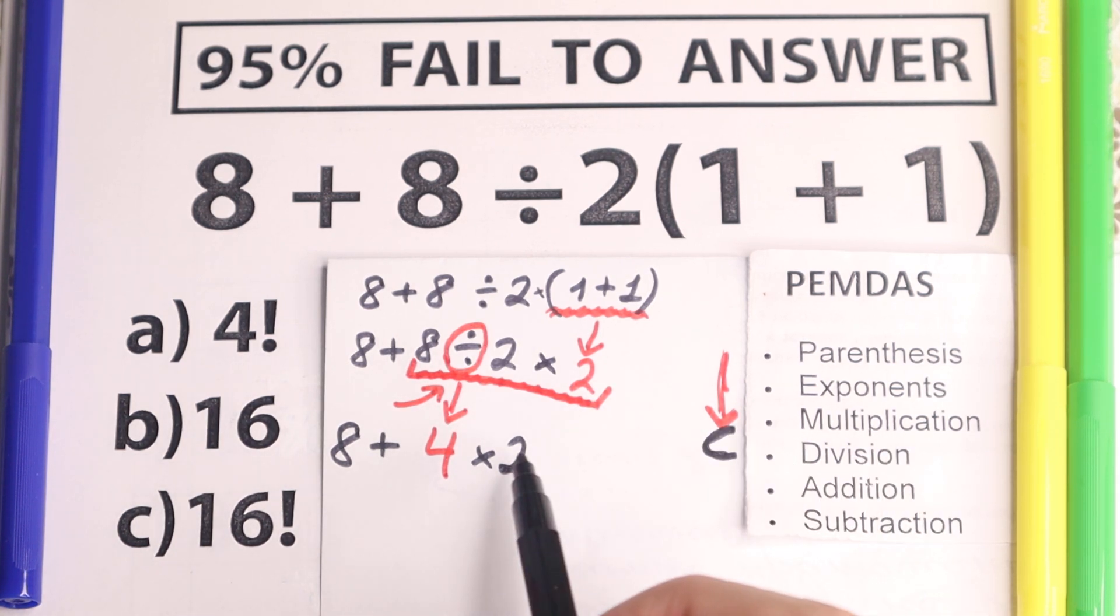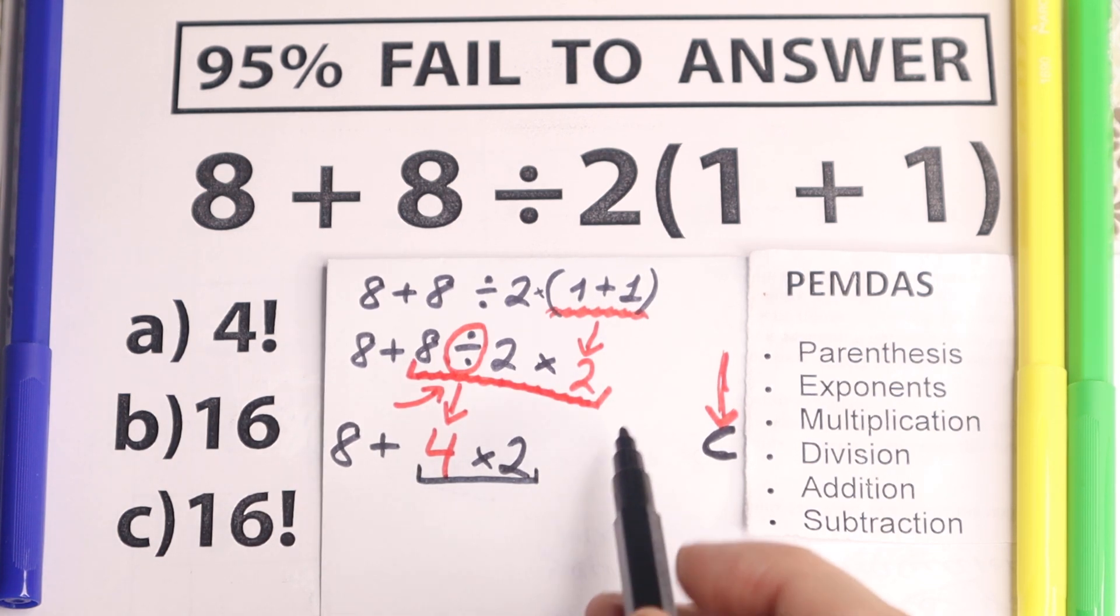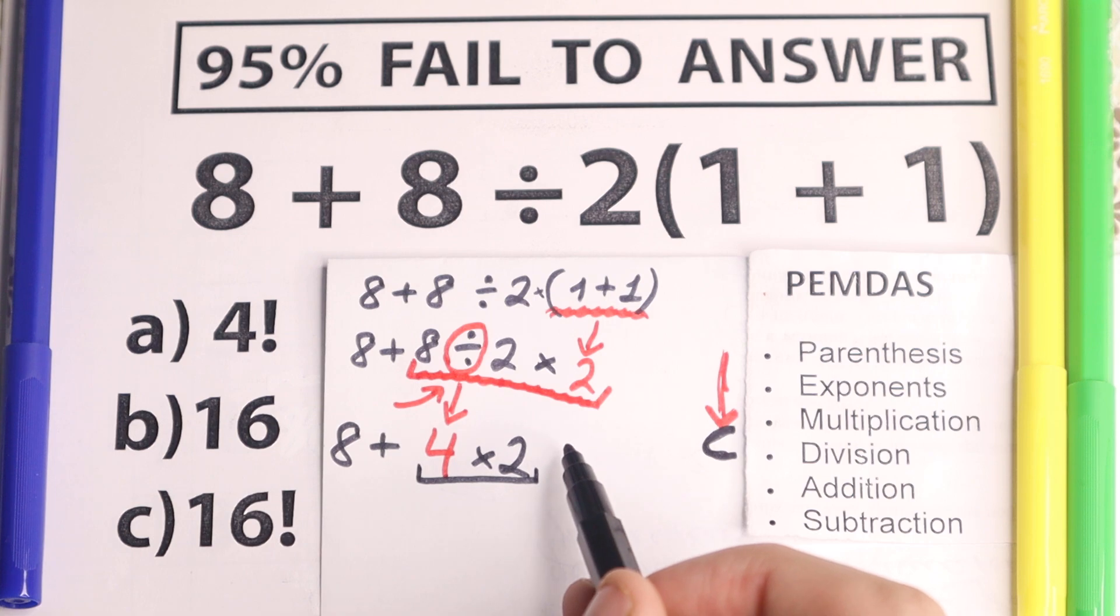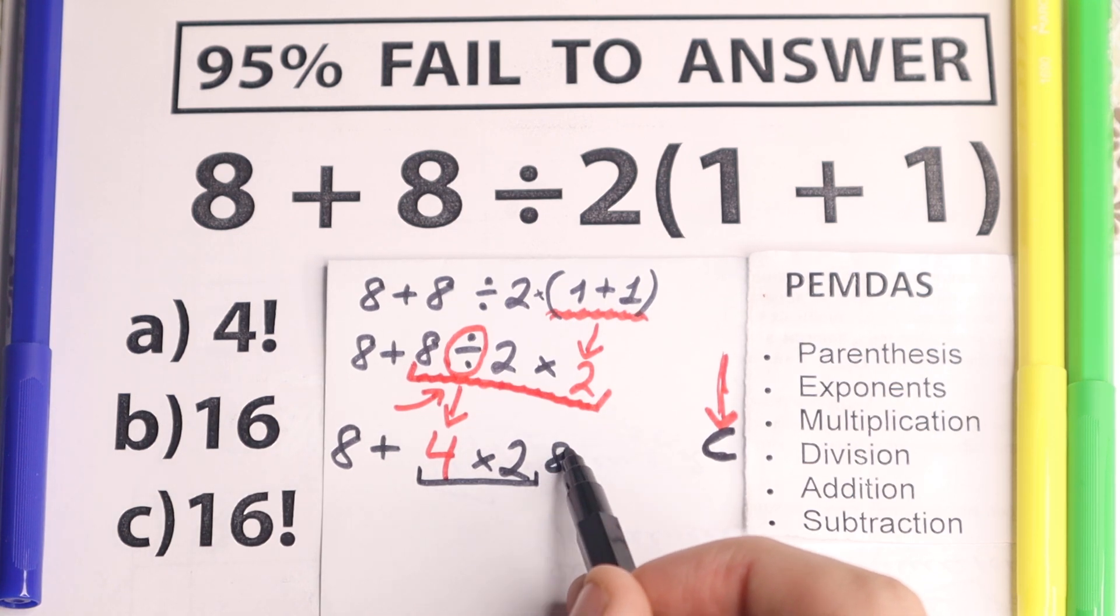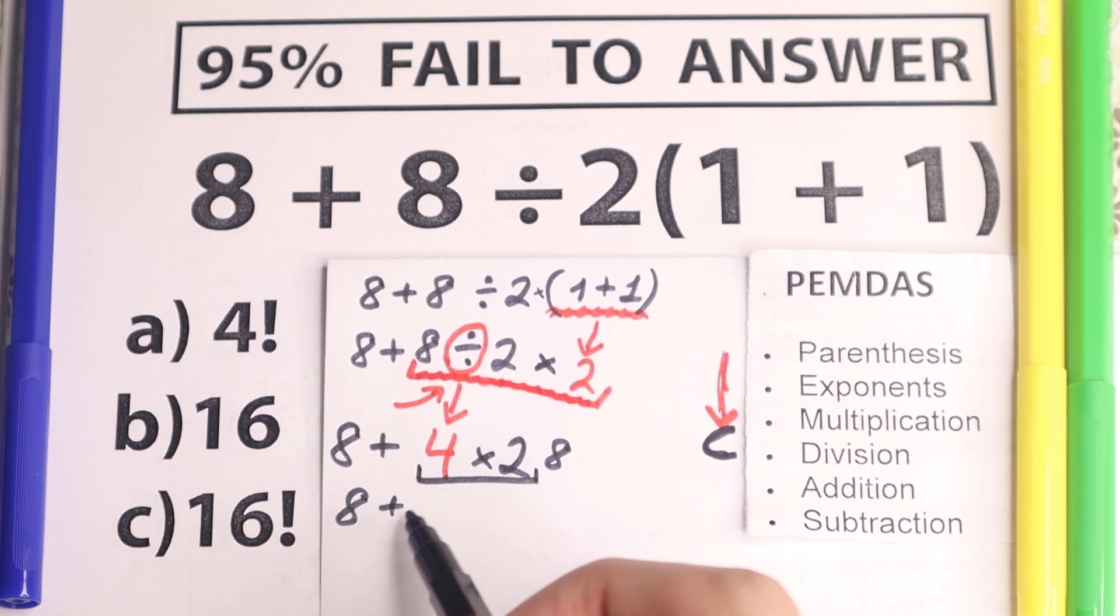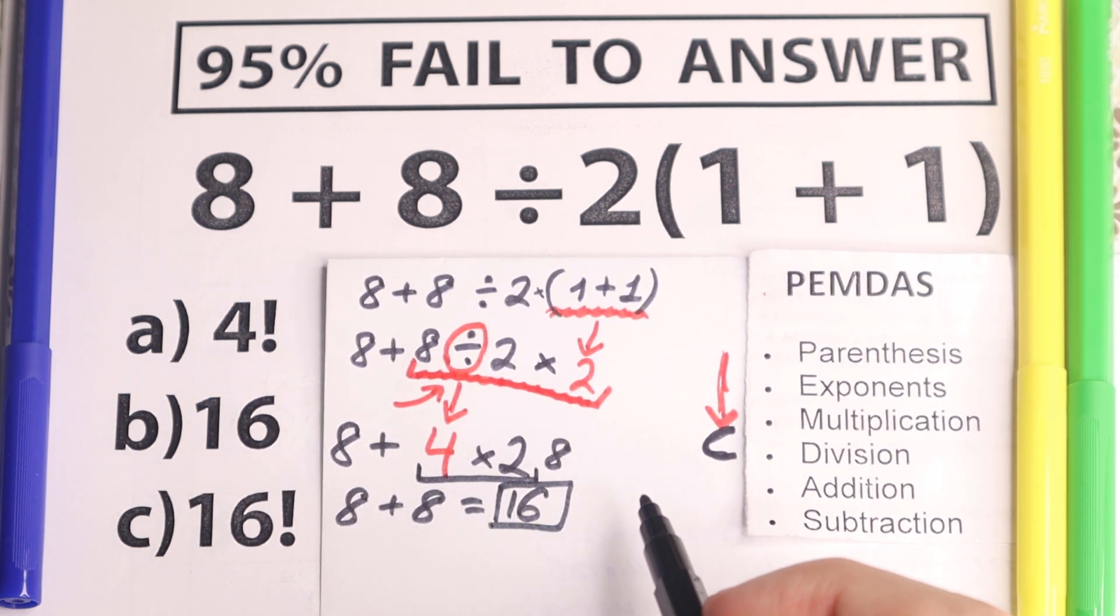The last step, as you can see, we still have multiplication. So let's solve this, so 4 times 2 equals 8. And 8 plus 8 equals 16. This is our answer to this question.